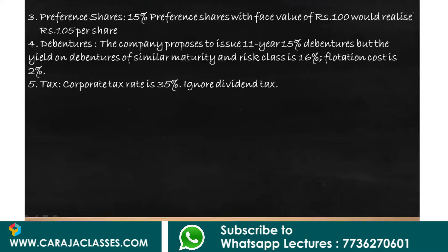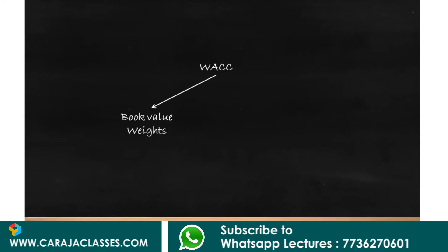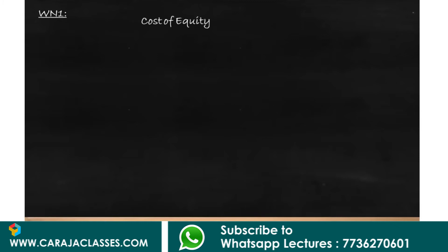With this information we have to calculate the weighted average cost of capital using both book value weights and market value weights. To calculate WACC, we should first calculate the cost of each and every source of financing. Let's start with the cost of equity. Cost of equity is equal to D1 divided by P0 plus g.